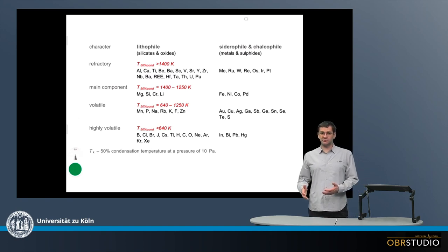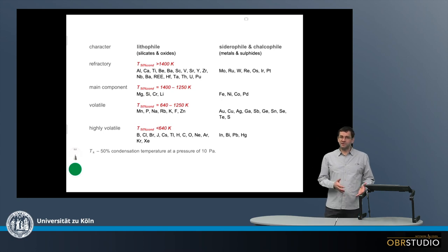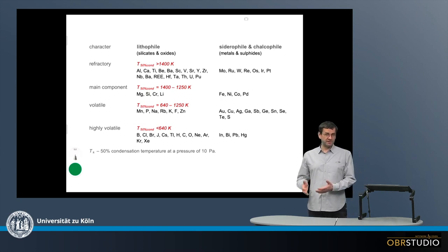An important tool to understand the processes within the protoplanetary disk and in the early solar system are the chemical compositions of bulk meteorites, but also the minerals within these meteorites.